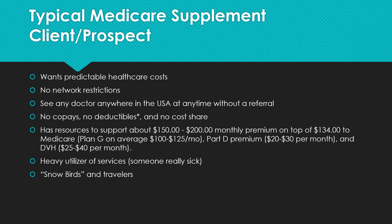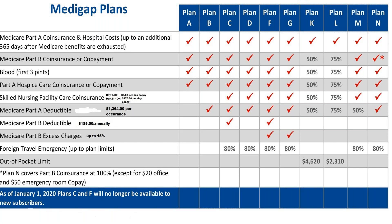There are 10 different Medicare supplement policies, alphabetized from A through N. The two most commonly chosen are Plan F and Plan G. However, Plan F is being discontinued in about 13 months — if you already own one, you'll keep it, but rates will increase faster than Plan G going forward. Plan G is replacing Plan F and should be the most popular plan going forward. The second most popular is Plan N.